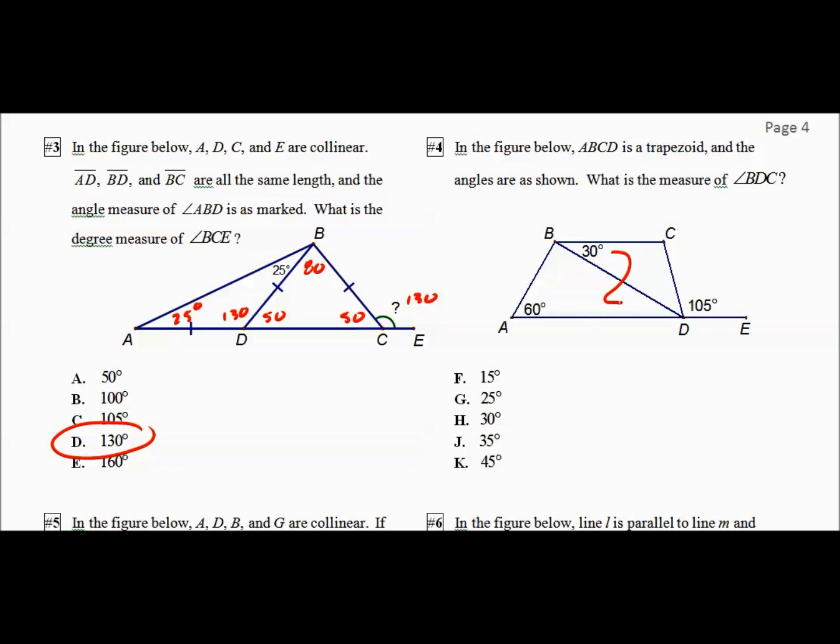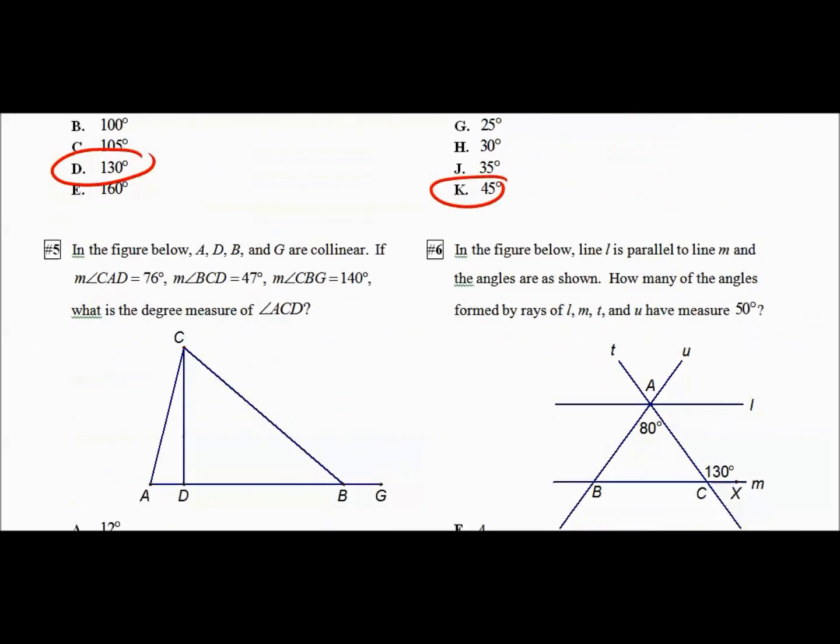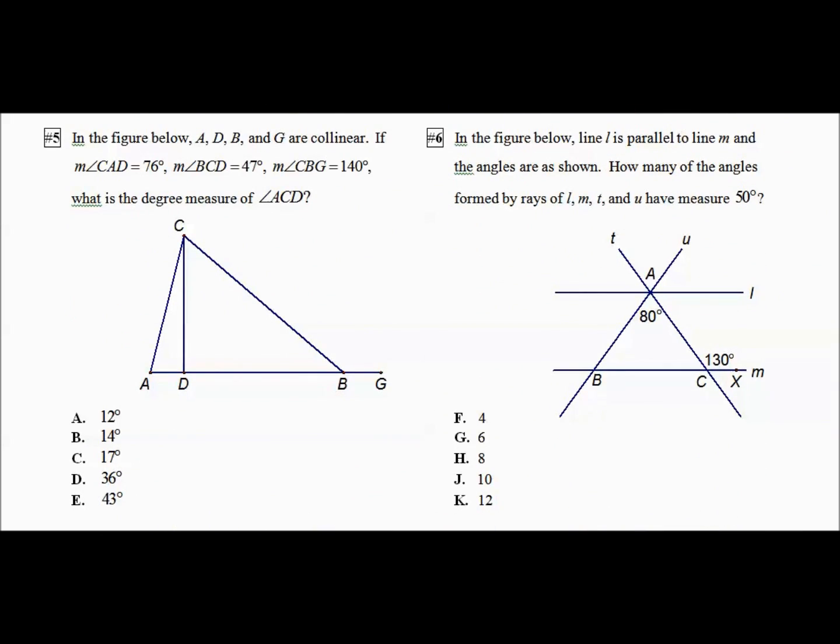This has got the alternate interior angles because it's a trapezoid, which means these are congruent. Therefore, this is 30. These three add up to 180. Therefore, this is 45. In the figure below, we've got all these collinear. This is 140. This is 40. BCD is 47. So that gets this to 93, which means this angle is 87. CID is 76. Add them all together, we find this is 17.